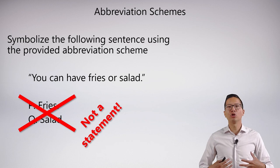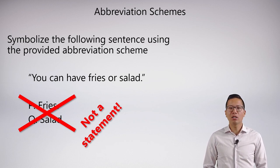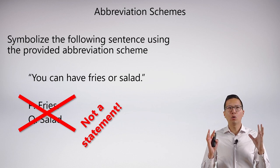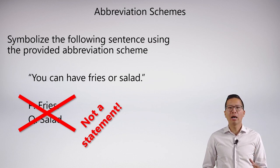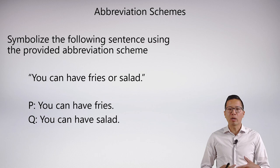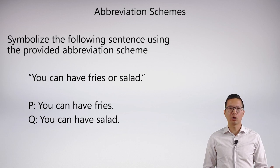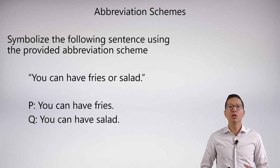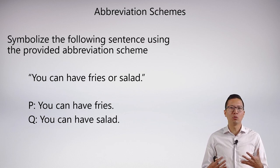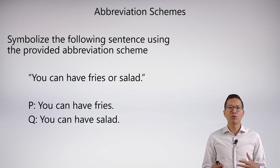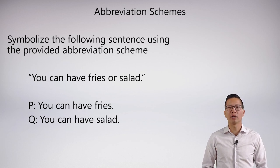We actually have to capture the genuine meaning of the English sentence. If I say 'you can have fries or salad' and I want to pick out the correct statements being expressed, the right statements here are 'you can have fries' and 'you can have salad' — and so these are going to be our P and Q. Normally we would give you the abbreviation scheme and you would have to translate this into logic, but I'm just explaining what an abbreviation scheme really is: it gives you the letters which represent statements expressed within the sentence you need to translate.